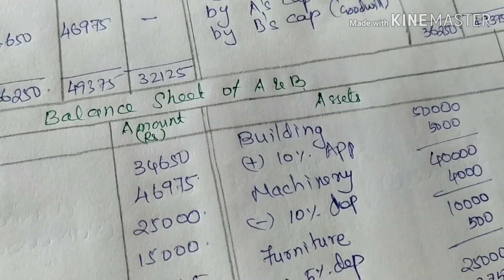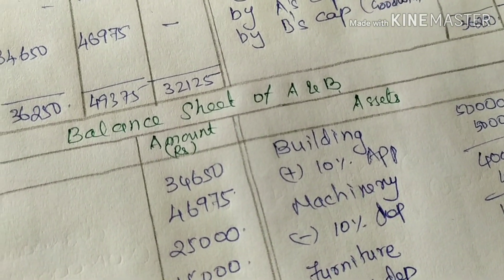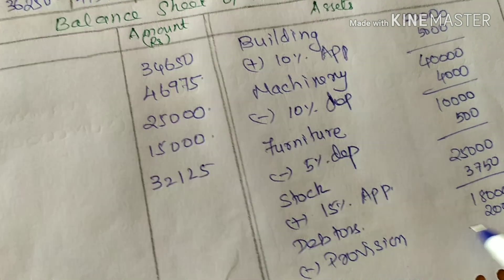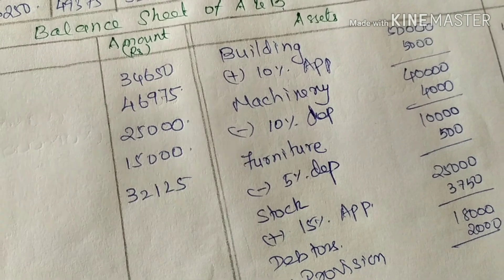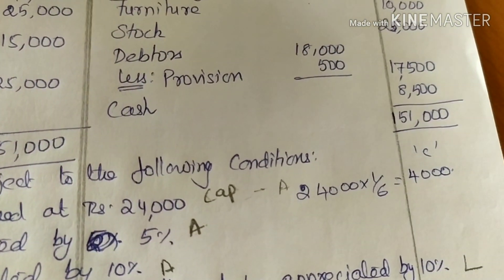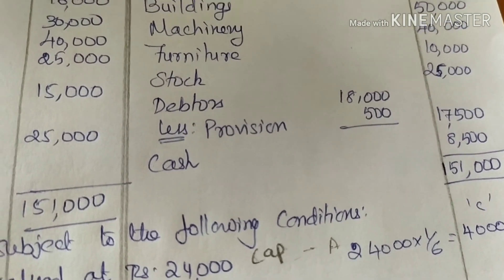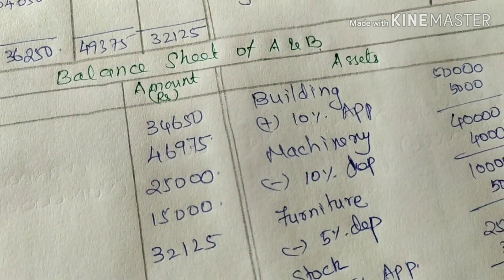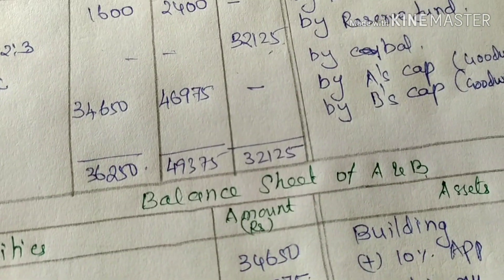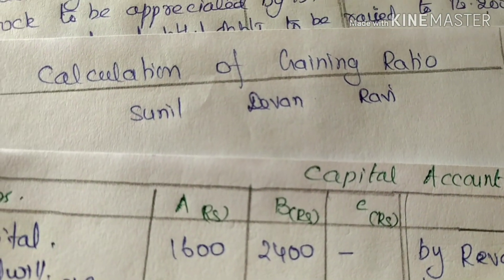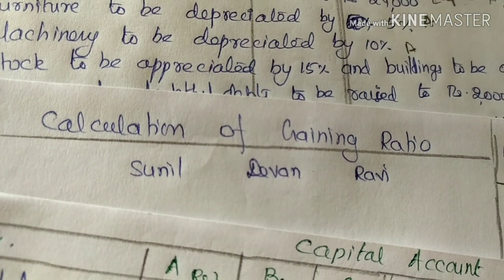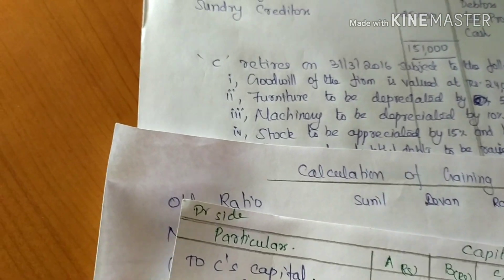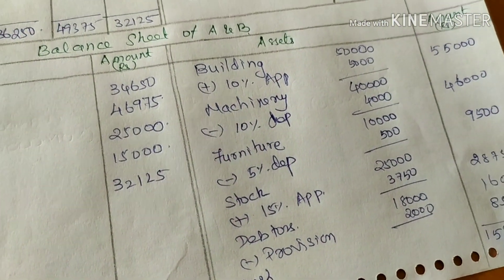Debtors net value is 16,000. Cash is 8,500. The total of the balance sheet is 1,53,750 on both sides. The balance sheet balances.